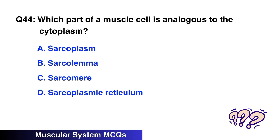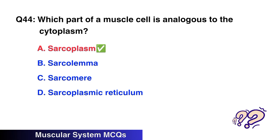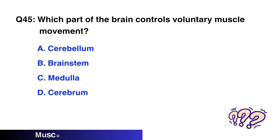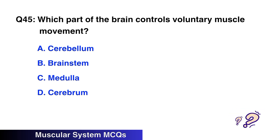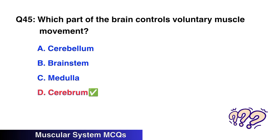Question No. 44: Which part of the muscle cell is analogous to the cytoplasm? The right option is A: Sarcoplasm. Question No. 45: Which part of the brain controls voluntary muscle movement? The right option is D: Cerebrum.